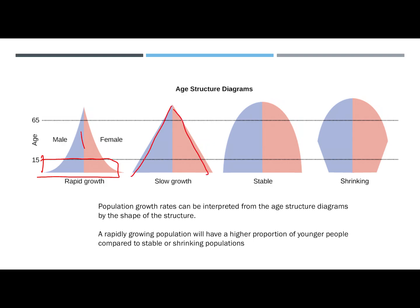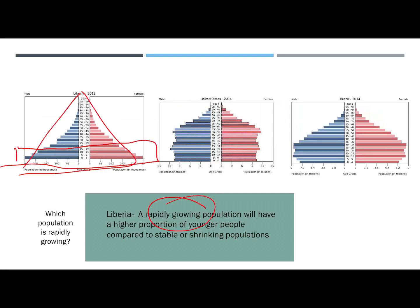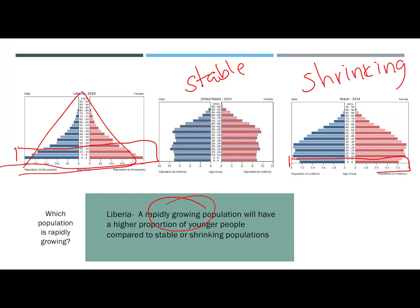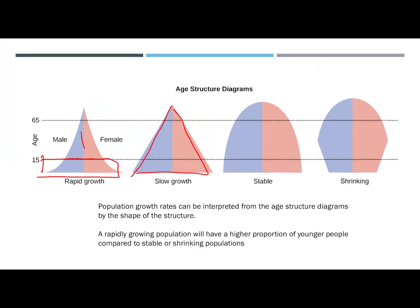Slow growth is pretty even. Stable looks kind of like a mushroom or a hill shape, and shrinking also has a mushroom shape. So going back, the United States is considered stable, while Brazil is shrinking because their pre-reproductive group is very small.